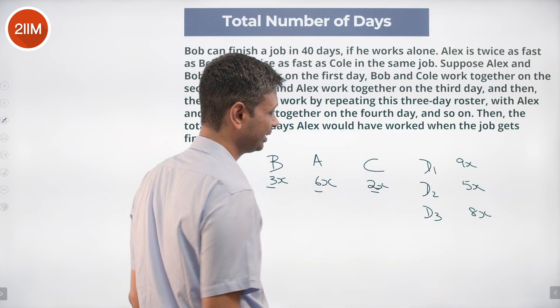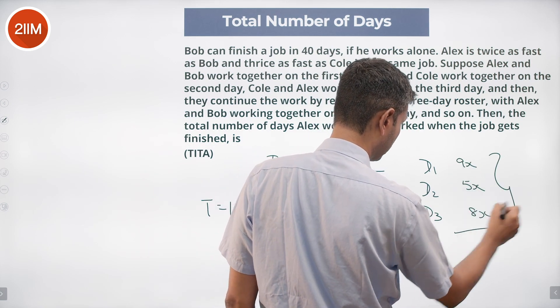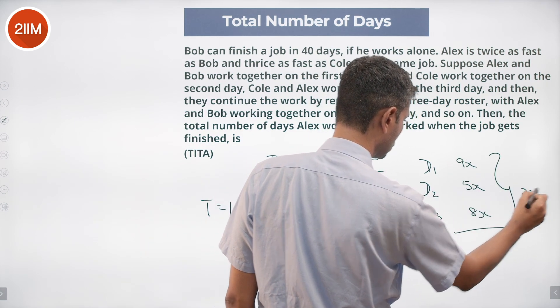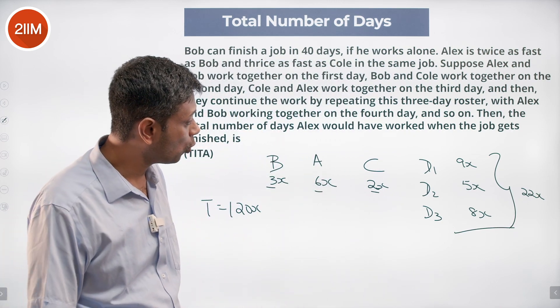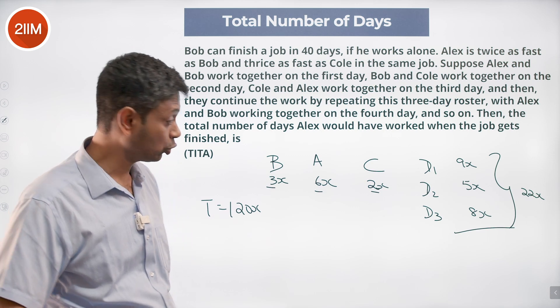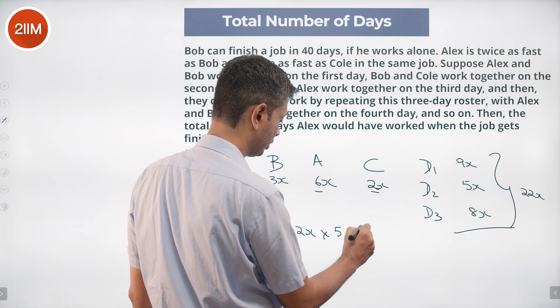We have to go up to 120x. In a 3-day cycle, we do 9 plus 5 plus 8, 14 plus 8, 22x. So we do this 3-day cycle 5 times over. 22x into 5 is 110x.